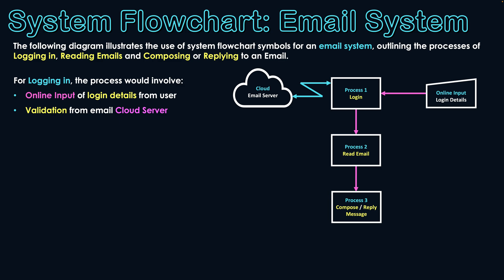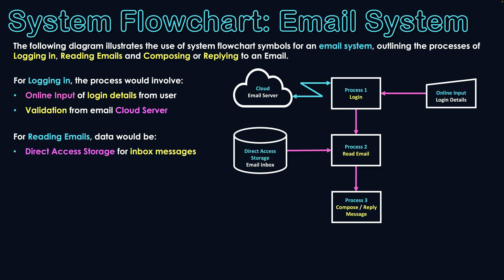We then get to process two: the reading of the emails. How do we actually get that email data? The data is stored in the inbox — we call it the client inbox. It's been downloaded from the server and stored on the user's device. This means there needs to be syncing taking place between the client's email inbox and the cloud server, downloading those email messages so that they can be read by the user on whatever device they're viewing their emails on.